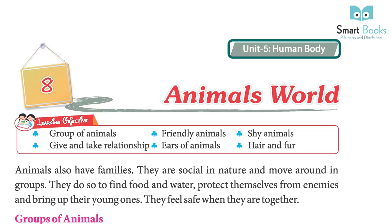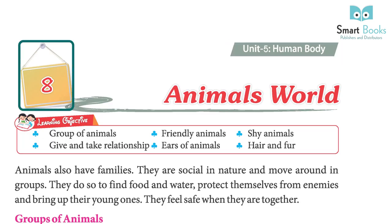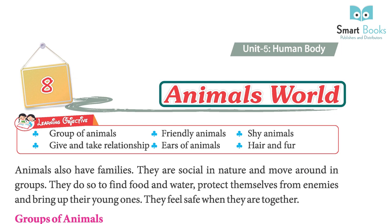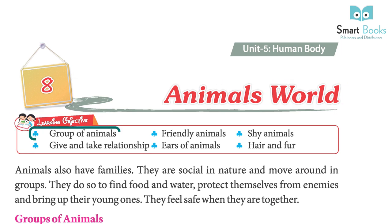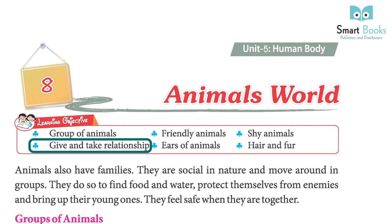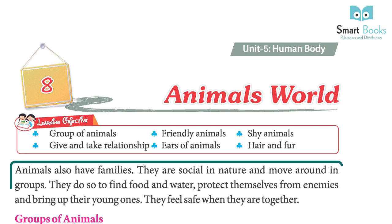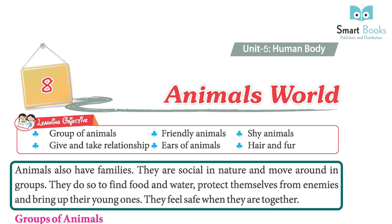Unit 5: Human Body, Chapter 8: Animals World. Learning objectives include groups of animals, friendly animals, shy animals, give-and-take relationships, and ears of animals. Animals also have families — they are social in nature and move around in groups. They do so to find food and water, protect themselves from enemies, and bring up their young ones.